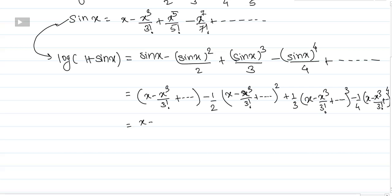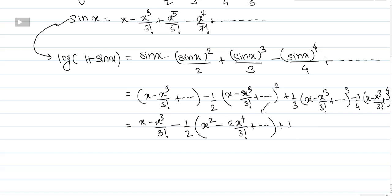Now simplify the first bracket as x minus x cubed by 3 factorial. For the second bracket, expanding the square: we get x squared, and the 2ab term gives us 2 times x times x cubed by 3 factorial, which is 2x raised to 4 by 3 factorial, up to infinity. From the 1/3 bracket we take only x cubed terms, and from the 1/4 bracket we take only x raised to 4 terms.